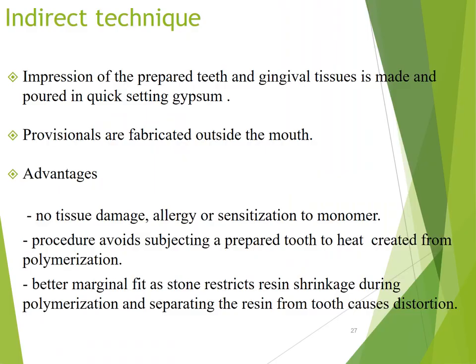In the indirect technique, an impression of the prepared teeth and gingival tissue is made and poured in quick-setting gypsum; provisionals are fabricated outside the mouth. Advantages are: no tissue damage, no allergies or sensitization to monomer as it doesn't contact the patient, avoids subjecting the prepared tooth to heat from polymerization, and may have better marginal fit as stone restricts resin shrinkage during polymerization. Separating the resin from the tooth causes distortion.